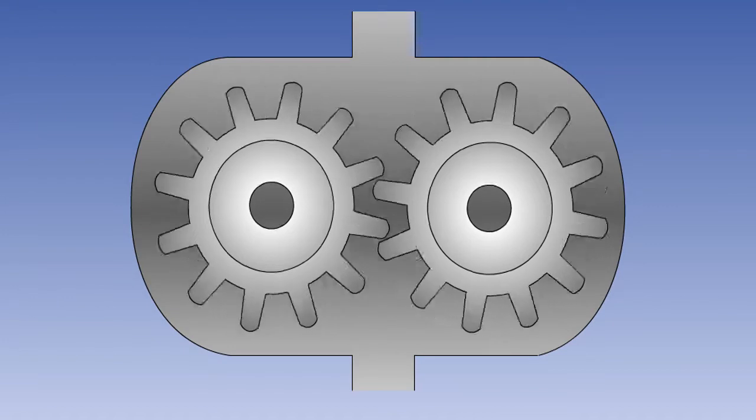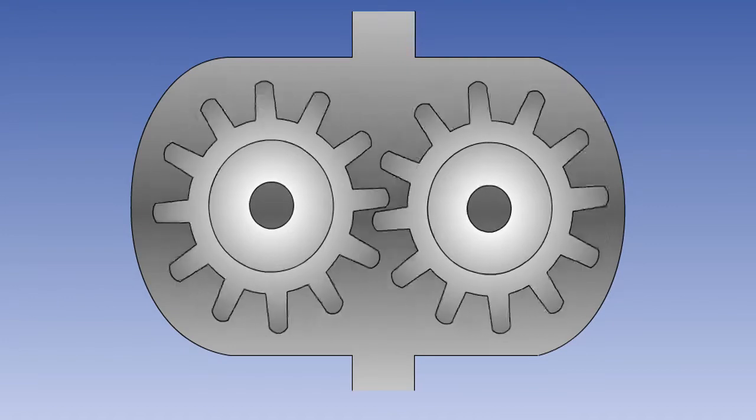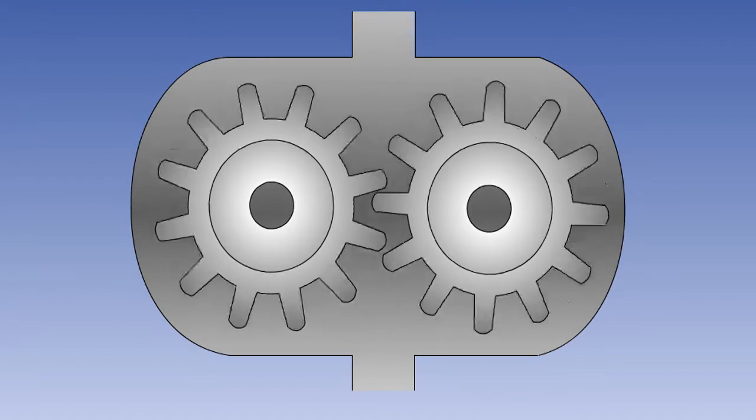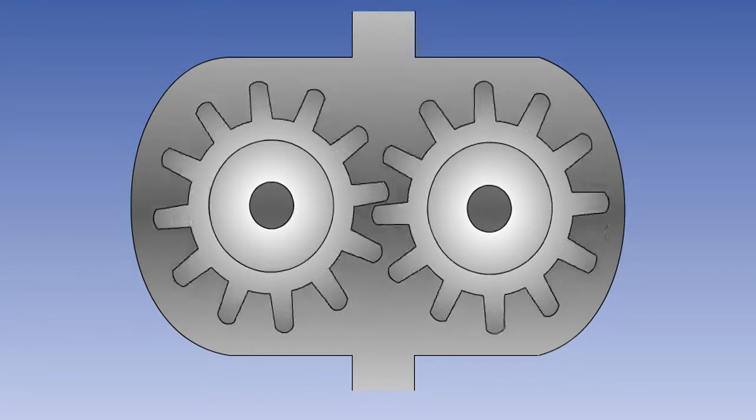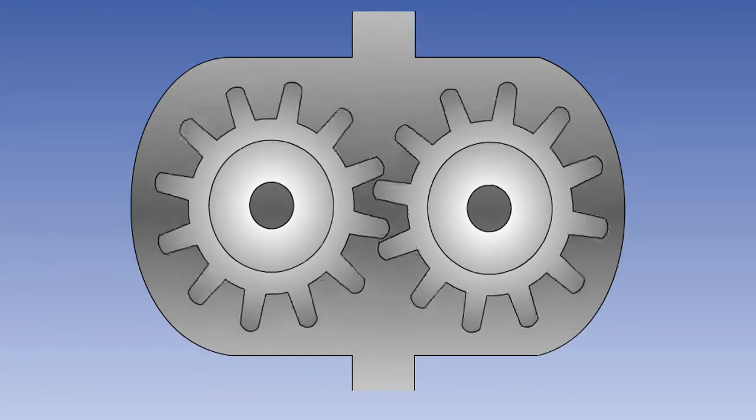A typical example of this type of pump is the spur gear displacement pump shown here. One of the gears is driven by the power source, normally the engine, and this gear in turn drives the other gear.